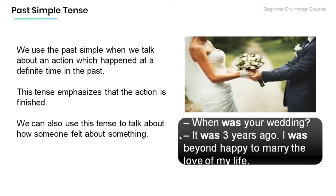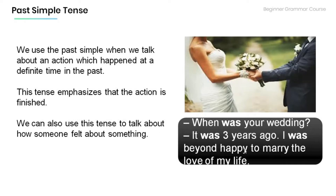Let's have a look at the dialogue. 'When was your wedding?' 'It was three years ago.' 'I was beyond happy to marry the love of my life.' In the sentence 'When was your wedding?' the past simple is used to ask a question about a past event. In 'It was three years ago,' it describes exactly when the event took place. And in 'I was beyond happy,' the past simple is used to talk about how that person felt.